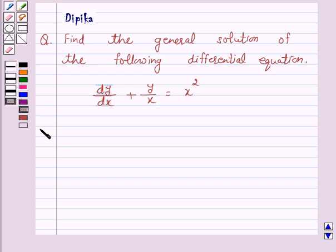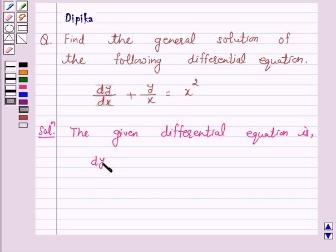Let's start the solution. Now, the given differential equation is dy by dx plus y over x is equal to x squared. Let us give this equation as number 1.